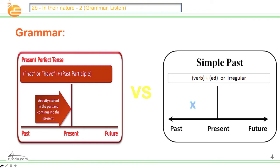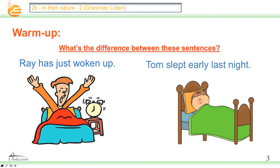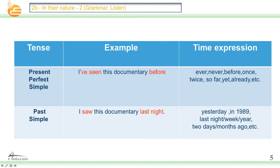Let's go back to the warming up question everybody. 'Ray has just woken up' — he slept, then now the activity started in the past and continues to the present, so he has just woken up. But in the past simple, 'Tom slept early last night' — stayed in the past. He slept early last night. Now I will explain more to know the difference.